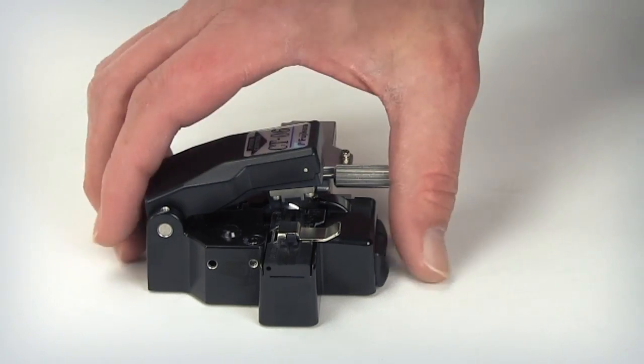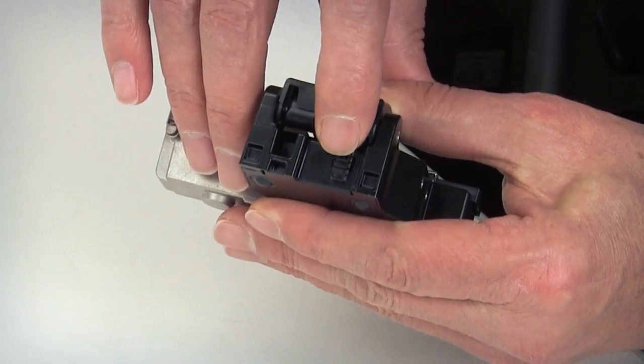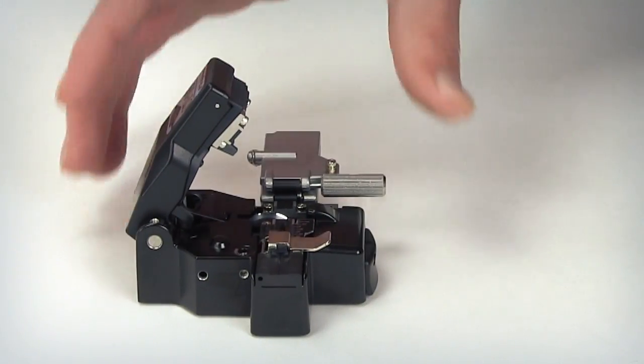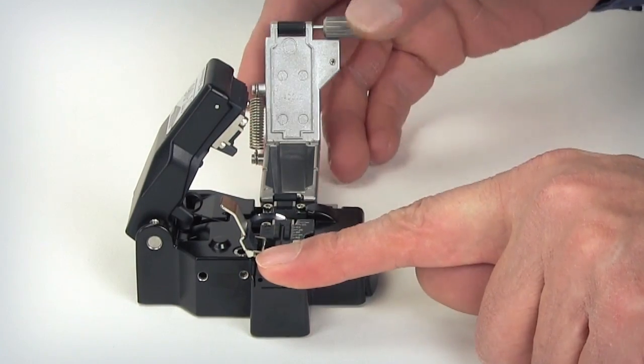Unlock the anvil lever by pressing down on the anvil lever and sliding the stopper downward. Open the adapter plate clamp and the scrap collector.